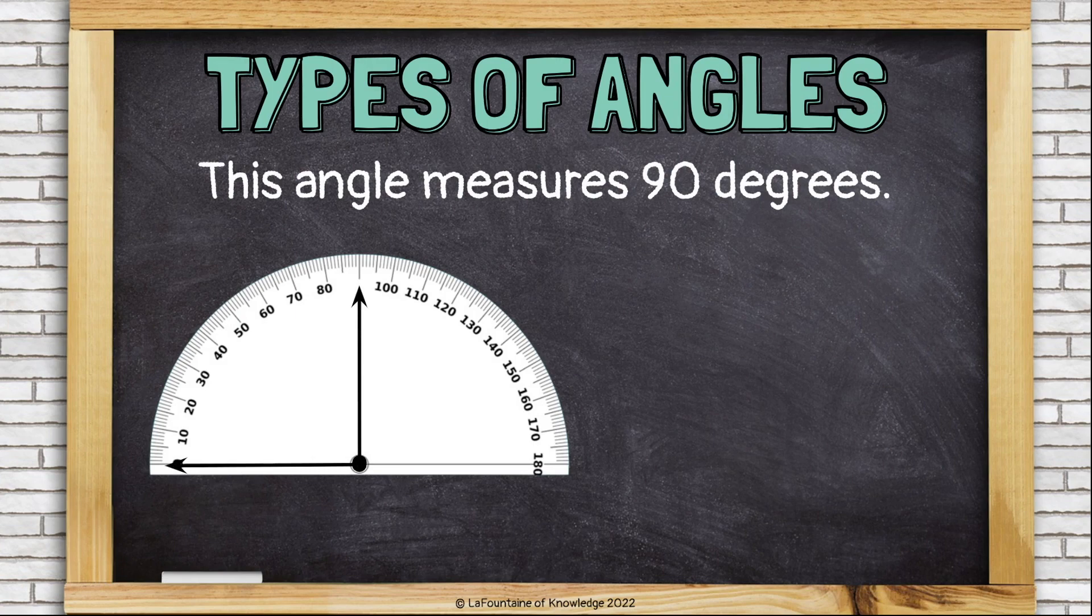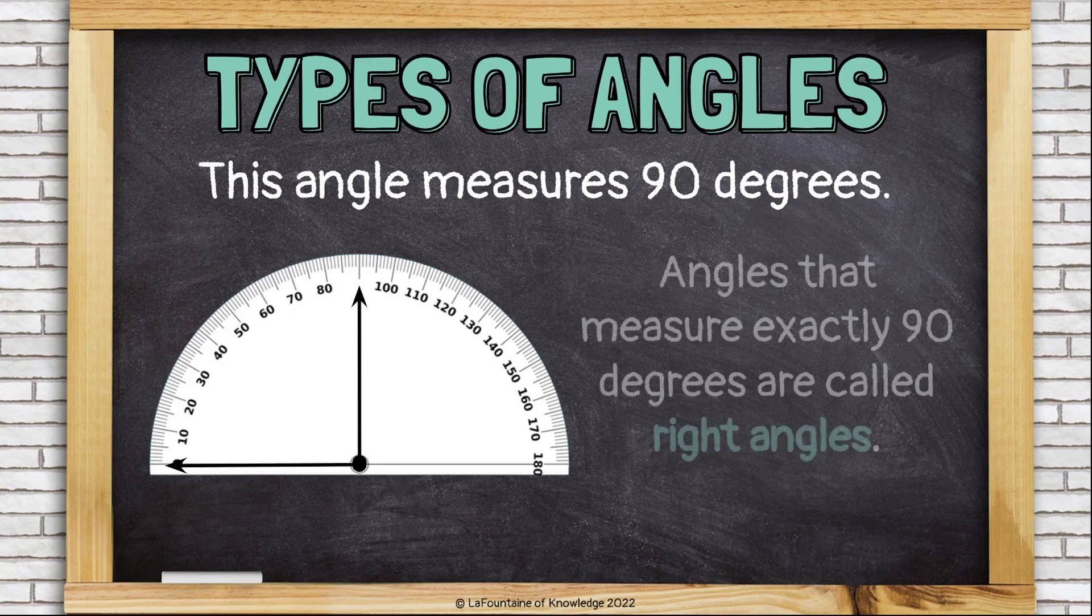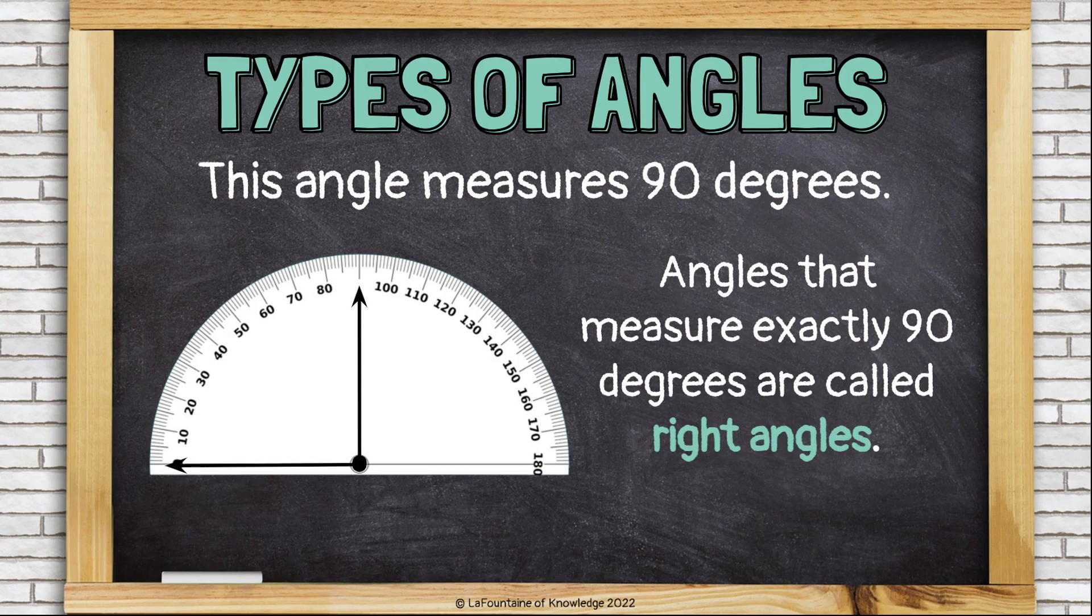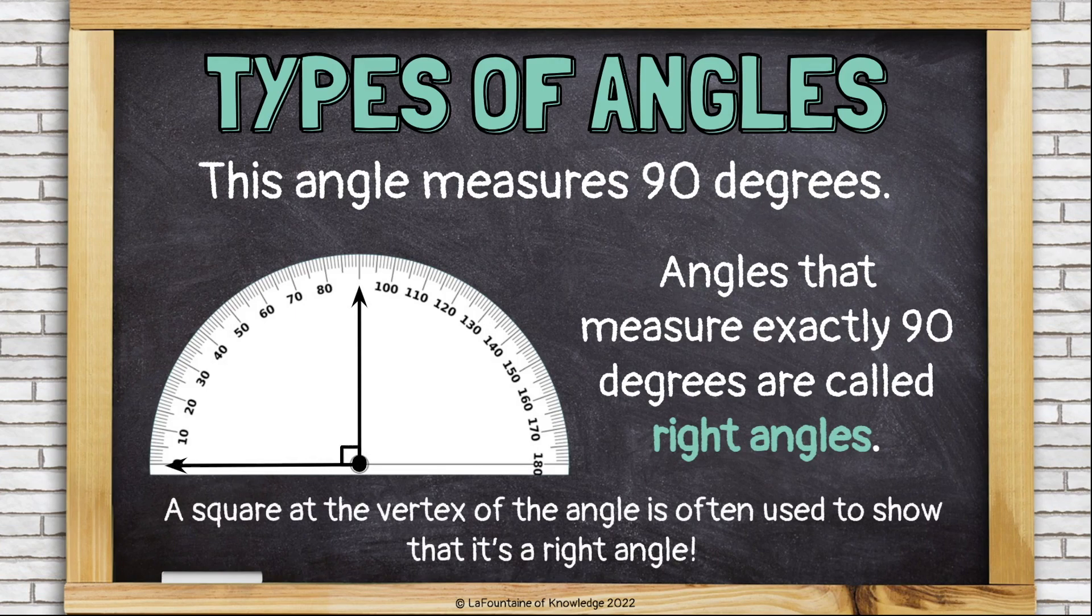This angle measures 90 degrees. Angles that measure exactly 90 degrees are called right angles. A square at the vertex of the angle is often used to show that it's a right angle.